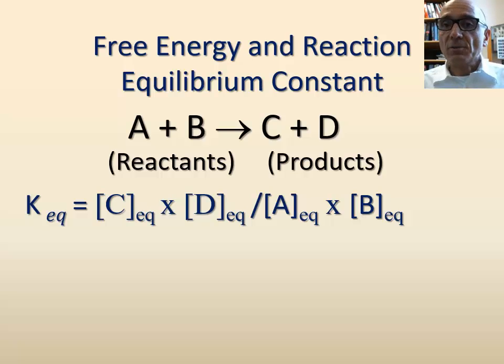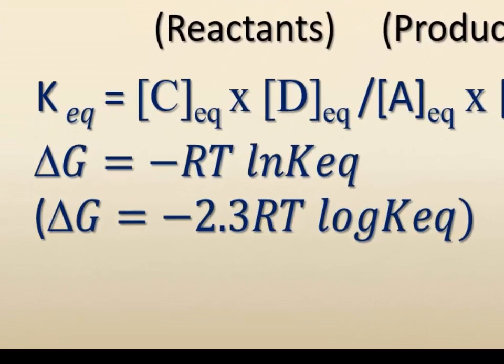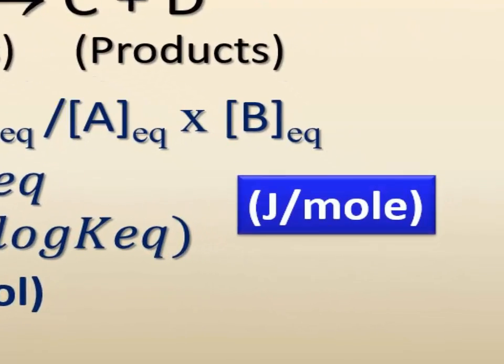Changes in free energy in a chemical reaction such as this one is dependent on the K-equilibrium of the reaction. At equilibrium, the net change in free energy, therefore, is expressed in the second equation where R is a constant and the unit of free energy becomes then joule per mole.